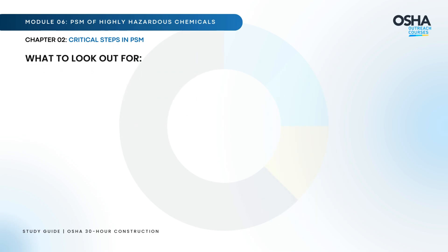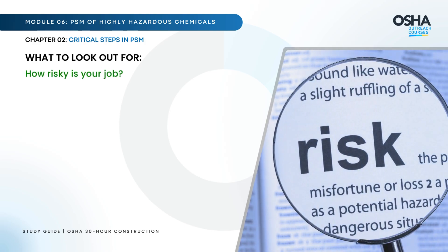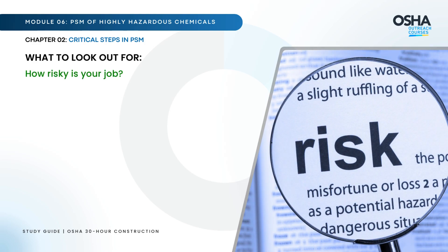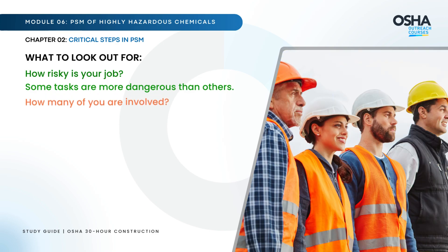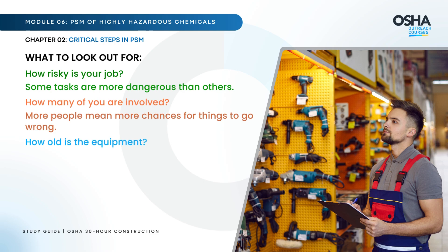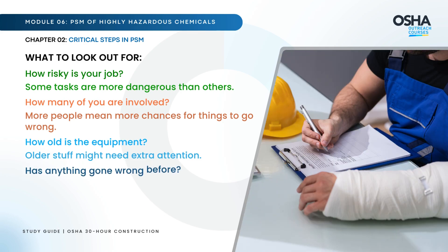When conducting a PHA, here's what to look out for: How risky is your job? Some tasks are more dangerous than others. How many people are involved? More people mean more chances for things to go wrong. How old is the equipment? Older equipment may need extra attention. Has anything gone wrong before? Learn from past mistakes.